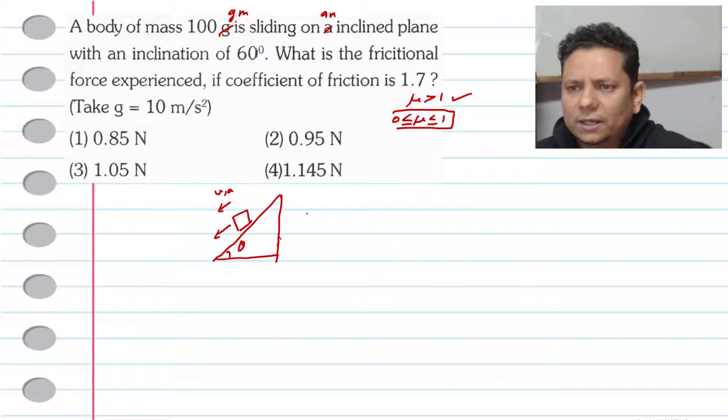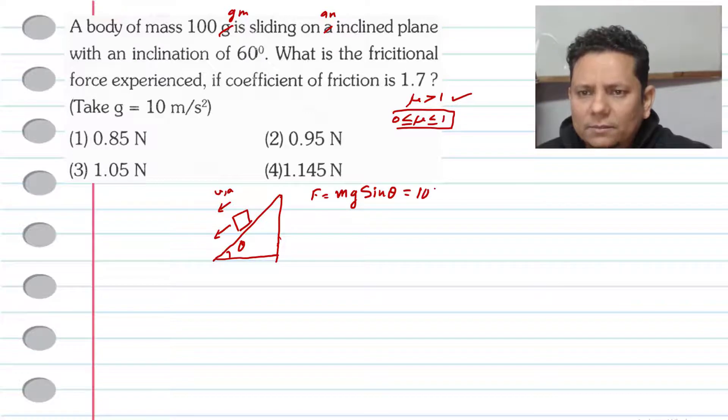The driving force will be equal to mg sin theta. If we put values here, m is 100 grams, so this is 100 × 10^-3 × g value 10 × sin 60. Sin 60 is root 3 divided by 2.